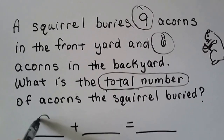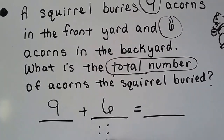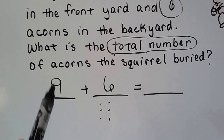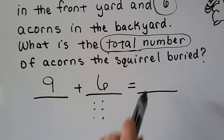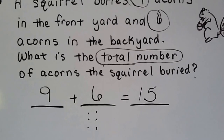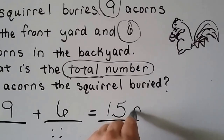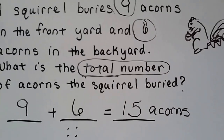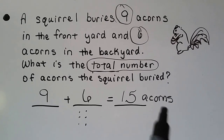So we have nine plus six. We can use counters or dots. Start at nine and count on — nine, ten, eleven, twelve, thirteen, fourteen, fifteen. Fifteen what? Fifteen acorns. We have to make sure we label what we found: fifteen acorns.